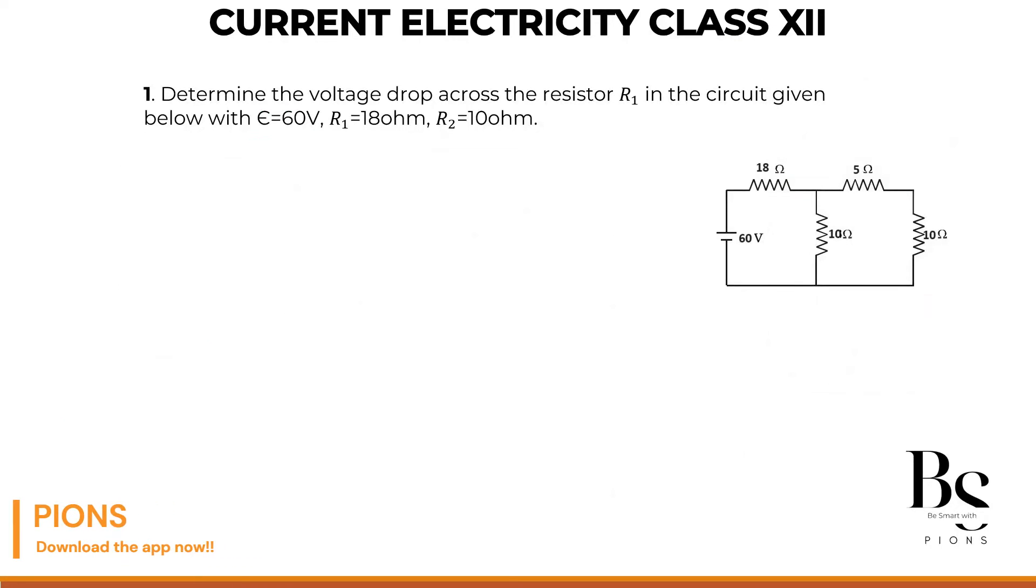Let's determine the voltage drop across the resistor R1 in the given circuit below. The EMF is 60 volts, R1 is 18 ohms. This one is our R1. We have to find the voltage across this.